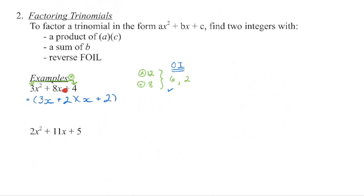So we're going to have 3x squared, that gets us back to the first term. 6x plus 2x is 8x. 2 times 2 is 4. Factoring polynomials is going to be the first step in many different mathematical topics coming up in future years, so you need to be able to do this really quickly. This reverse foiling is ultimately going to be the fastest method of doing this. But in the beginning, some people like to use what we call the cross product, just to help them organize.